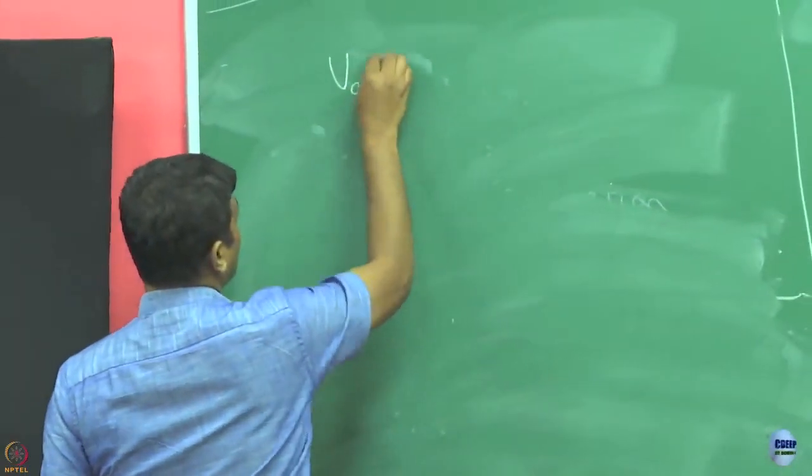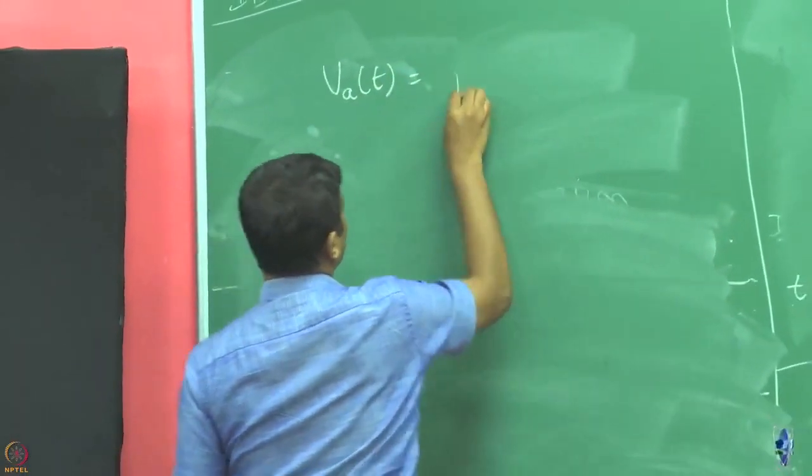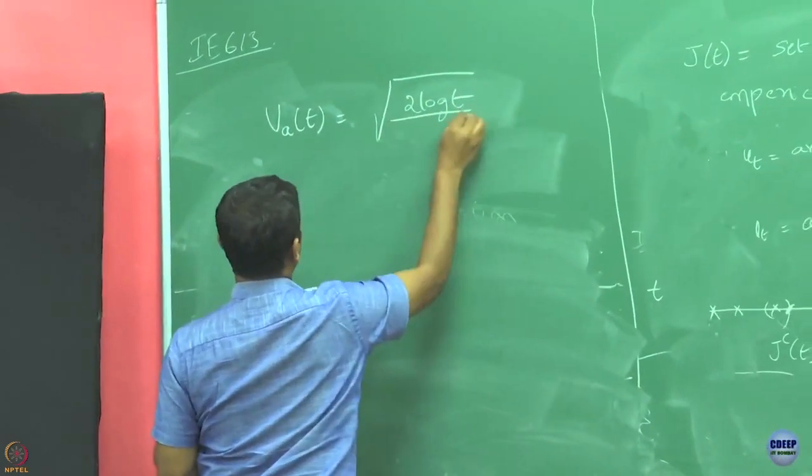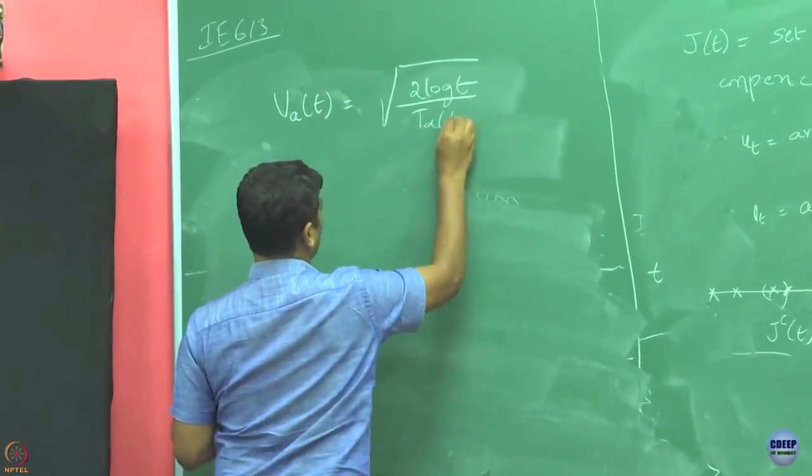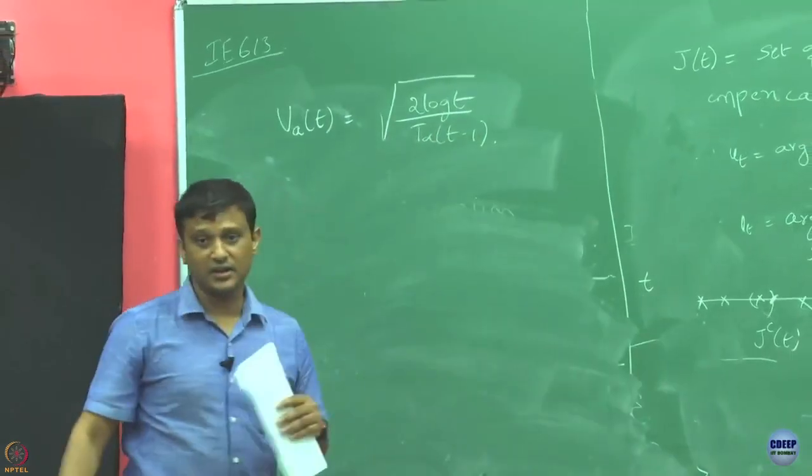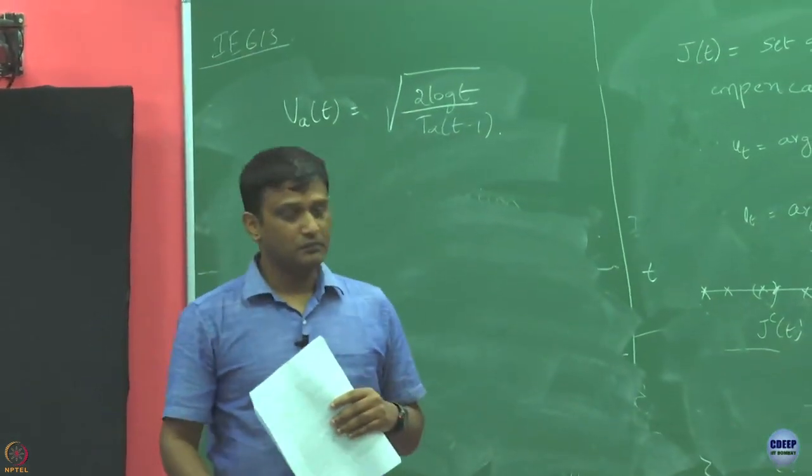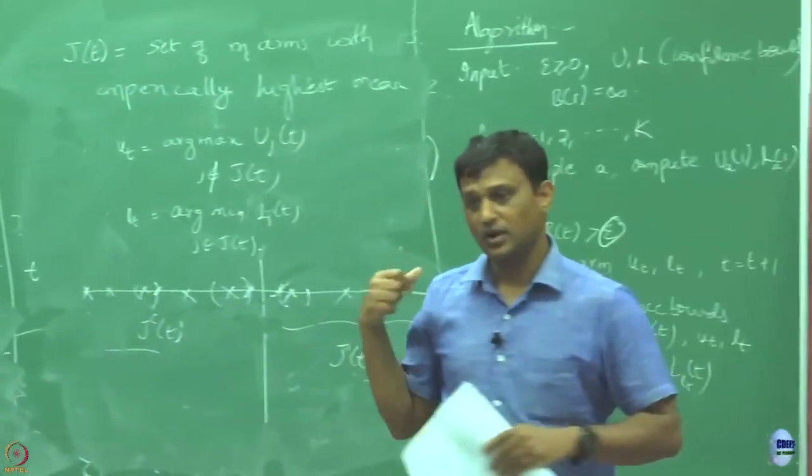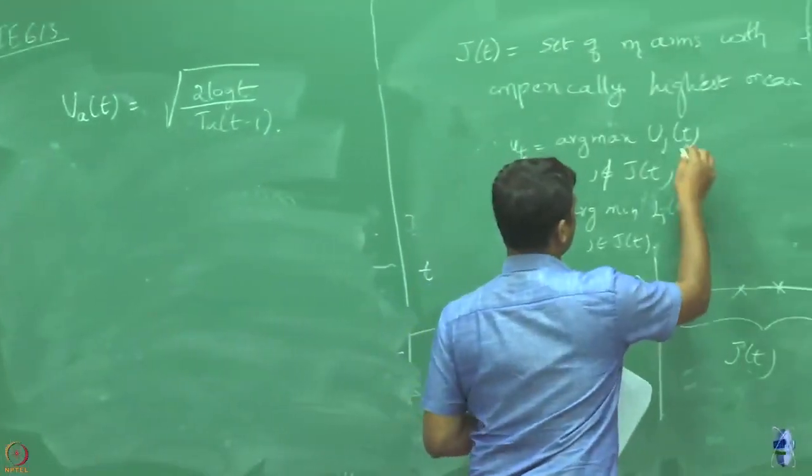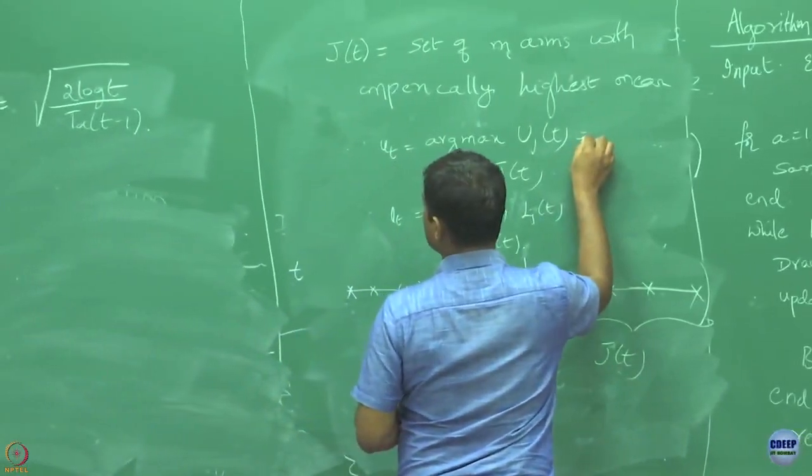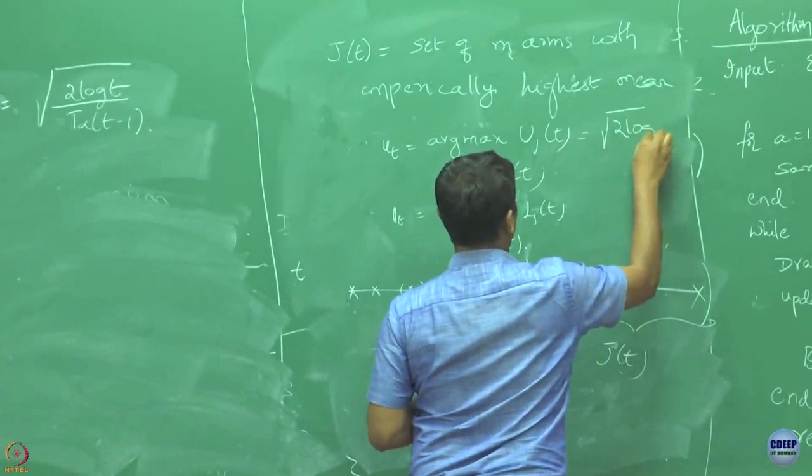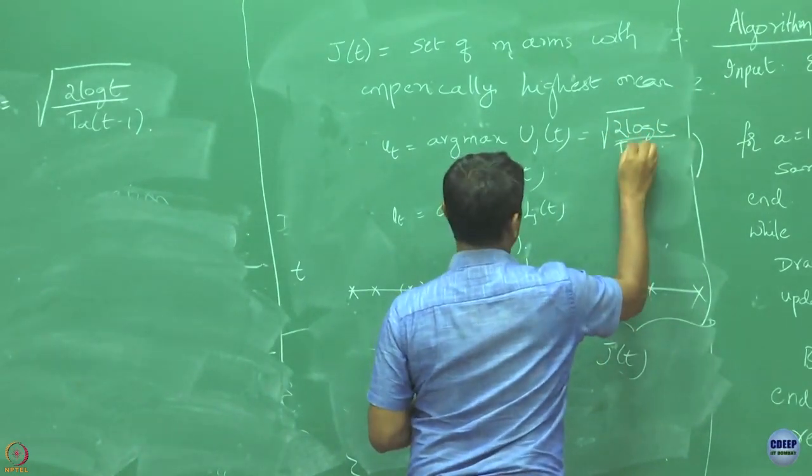Let me define at any time u_a(t) as this upper confidence bound based on Hoefding's inequality which we have obtained. So this u_j(t) is simply going to be whatever this quantity we have, so 2 log t by t_j(t-1).